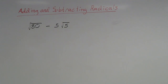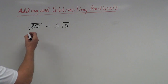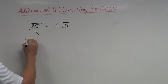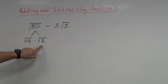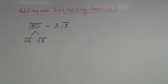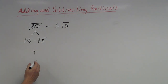Going back to simplifying radicals, I need to find the largest perfect square that divides evenly into 80. I can split 80 into the square root of 16 times the square root of 5, since 16 times 5 is 80. We use 16 because it's the largest perfect square that divides evenly into 80. The square root of 16 is 4, and the square root of 5 stays as is.